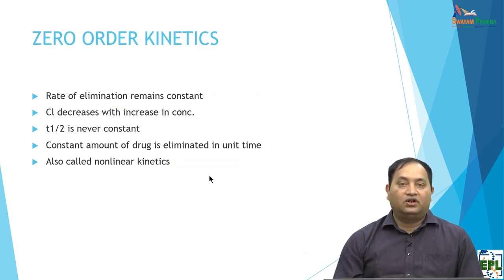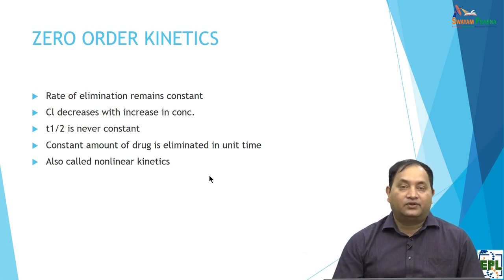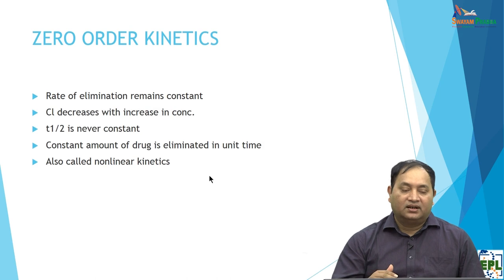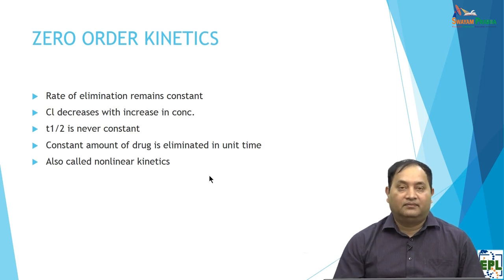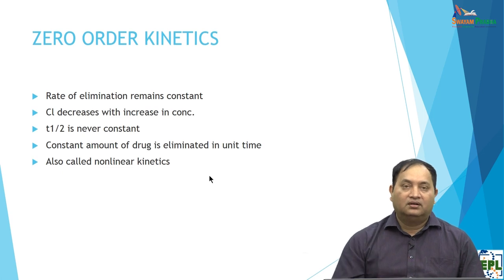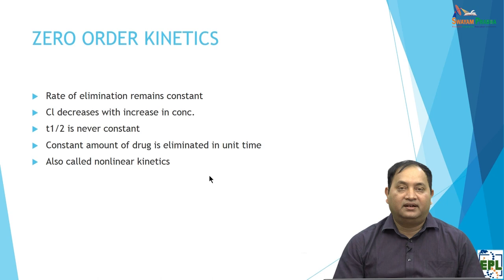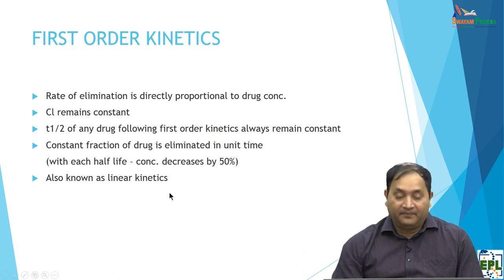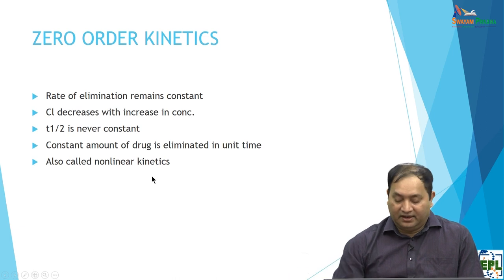In zero-order kinetics, the rate of elimination remains constant — meaning a constant amount of drug is eliminated per unit time, regardless of concentration. The clearance decreases with decreased concentration. Unlike first-order kinetics, the half-life is never constant in zero-order kinetics. Zero-order kinetics is also called non-linear kinetics. So, first-order kinetics = linear kinetics; zero-order kinetics = non-linear kinetics.